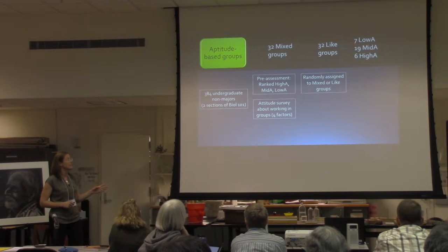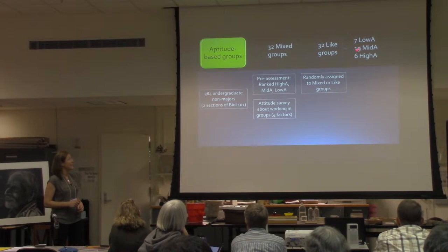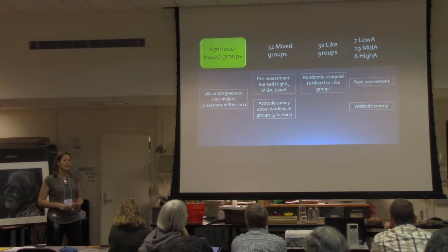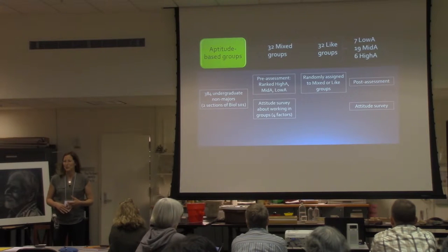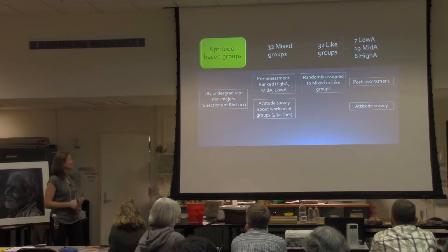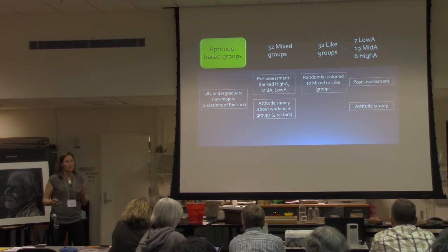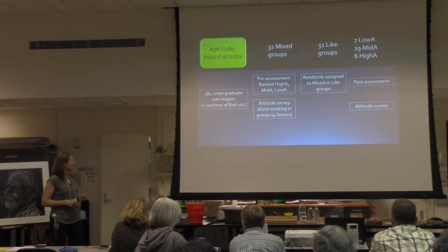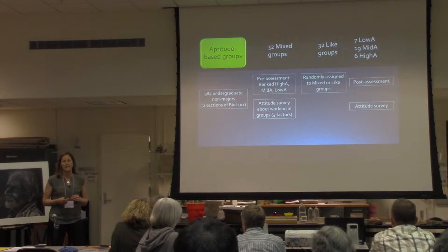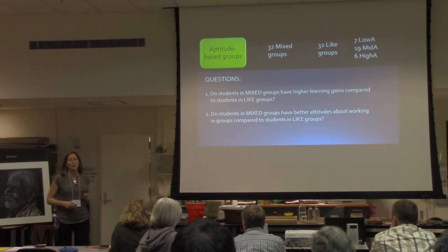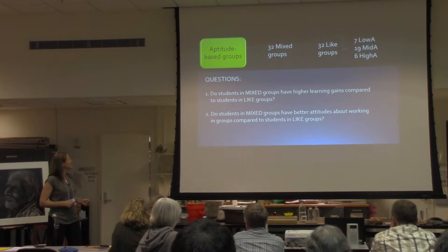The like aptitude groups broke down as seven all-low groups, 19 mid-aptitude groups, and six high-aptitude groups. We also gave a post-assessment and an attitudinal survey at the end of the quarter to see how attitudes toward group work changed over time. To analyze the data across all three studies, we used hierarchical linear modeling to account for the non-independence of students within a single group.